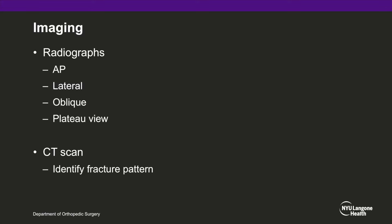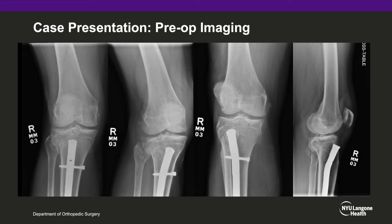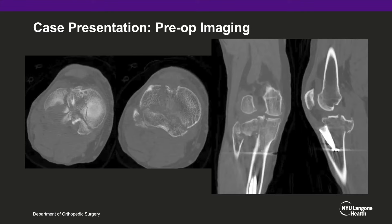Our case is a 50-year-old male with a history of a previous right IM nail performed 20 years prior, who now presents with right knee pain after a three-foot fall from a ladder. The patient was seen in the ED and placed into a bulky Jones knee immobilizer. On exam, the skin was intact with mild swelling and ecchymosis over the tibial plateau; compartments were soft, he was neurovascularly intact with strong pulses distally. Radiographs reveal a minimally displaced fracture of the medial and lateral plateau with an associated posterior shear fragment, further complicated by a previous intramedullary nail. CT scan reveals a split fracture of the medial condyle, a depressed lateral condyle, and a large displaced posterior fragment.